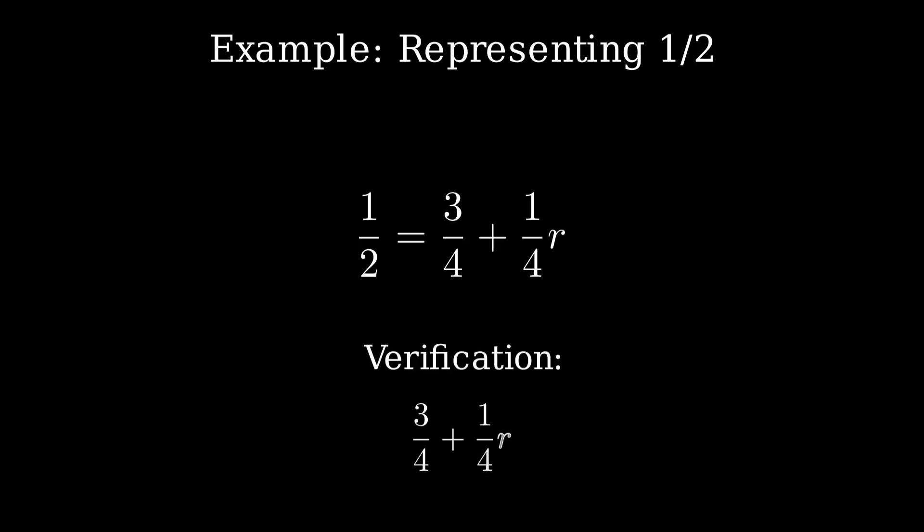Let's see an example. Can we represent 1 half as a rational dyadic number? Yes, 1 half equals 3 fourths plus 1 fourth times r. Let's verify that. Substituting r with negative 1, we get 3 fourths minus 1 fourth, which equals 2 fourths, or 1 half. It checks out. By introducing rational coefficients, we extend the dyadic system beyond integers, allowing it to express every rational number, and perhaps even more.